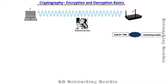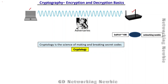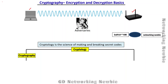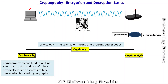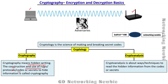This is actually a field known as cryptology. Cryptology is the science of making and breaking secret codes. Cryptology itself comprises two fields: one is known as cryptography, where we make codes, and then we have cryptanalysis, where we actually break those codes. Specifically, cryptography means hidden writing — it is the construction and use of rules, protocols, and codes to hide information.